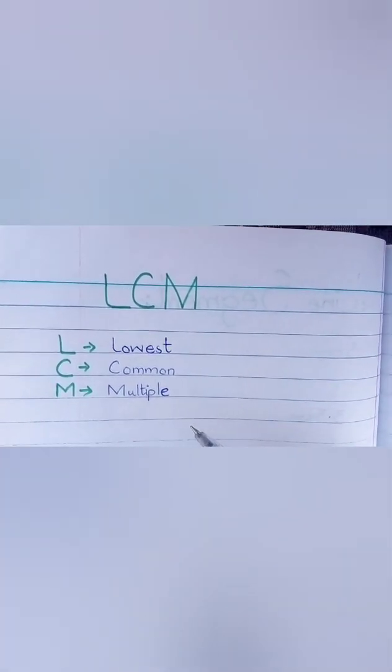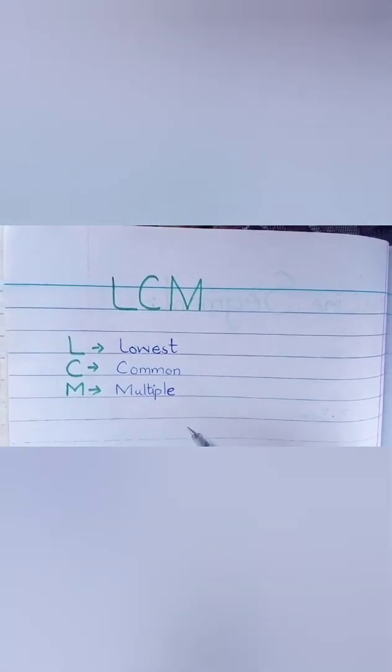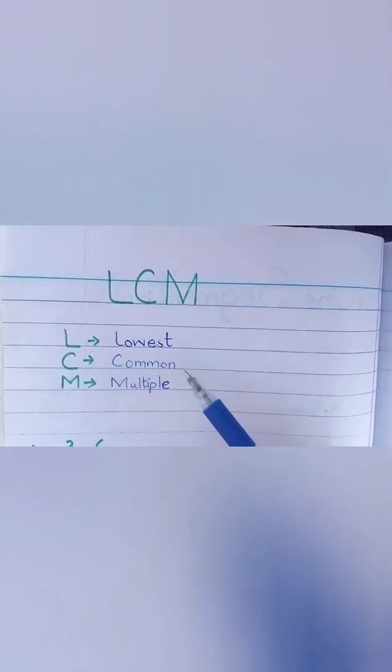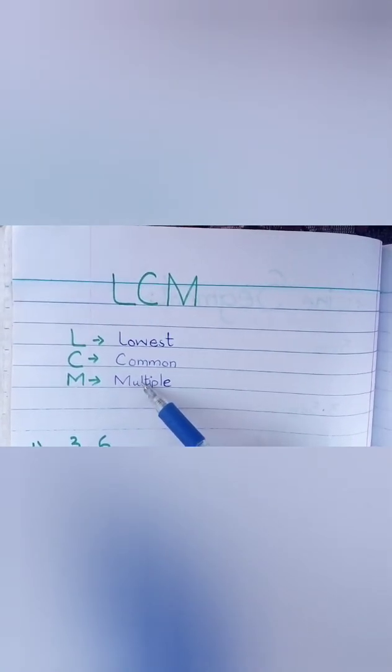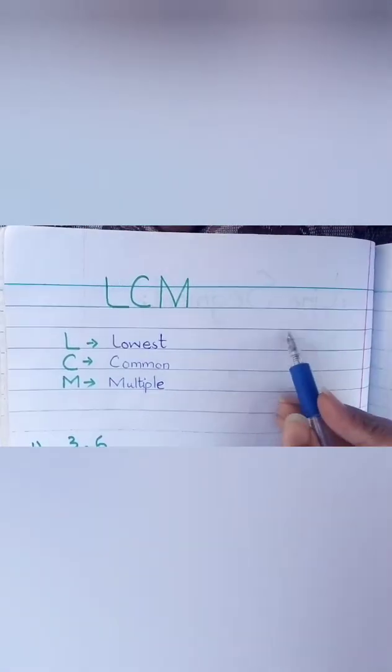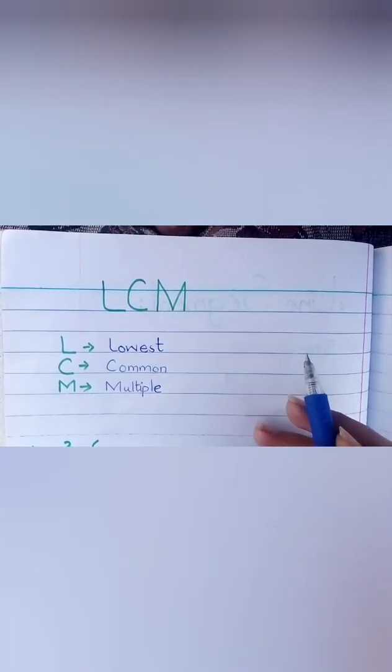Jitne bhi number aapko bula jayenge ki inke multiples find out karein, toh aap log check karenge ki sab mein common kaunsa hai. Common means jo sab mein present ho, woh hota hai common digit. Multiple, kisi bhi number ko natural number ke saat jab hum log multiply karte hain, toh woh hota hai multiple.